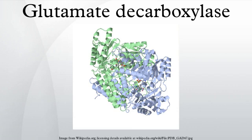Glutamate decarboxylase, or glutamic acid decarboxylase, is an enzyme that catalyzes the decarboxylation of glutamate to GABA and CO2. GAD uses PLP as a cofactor.